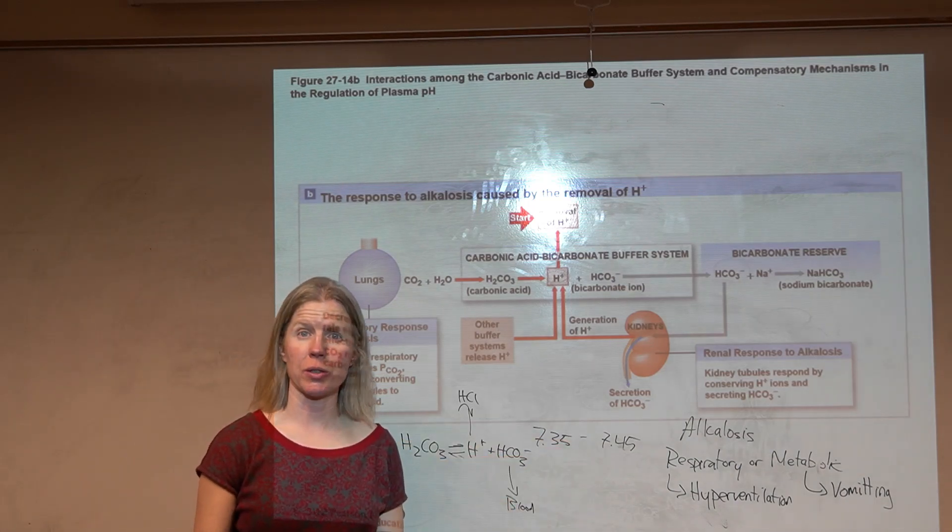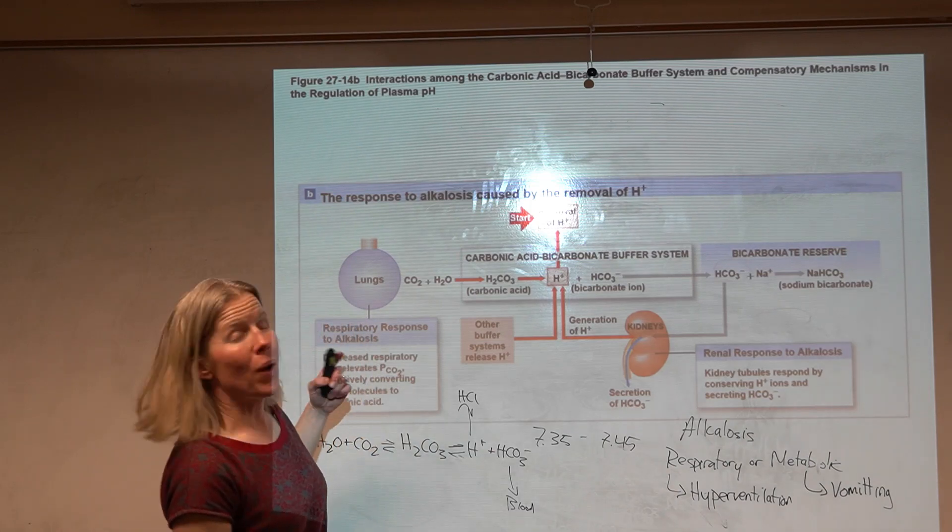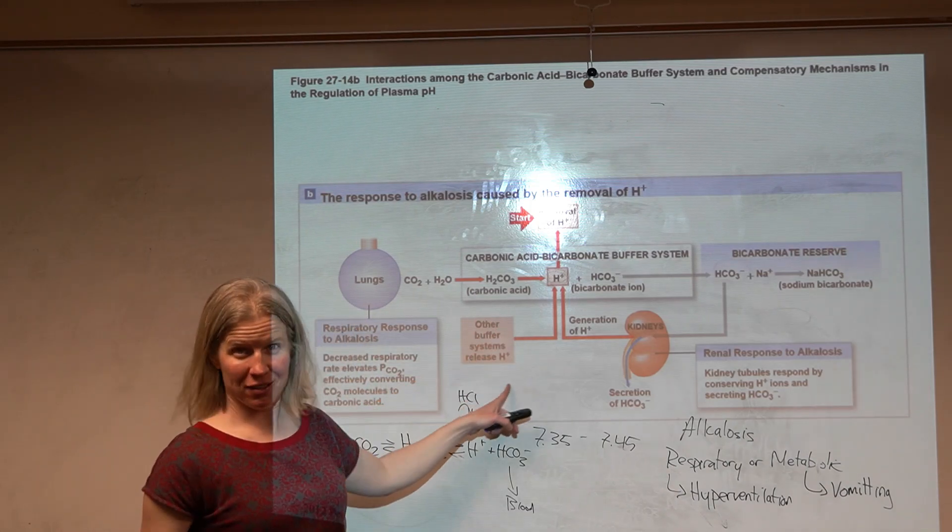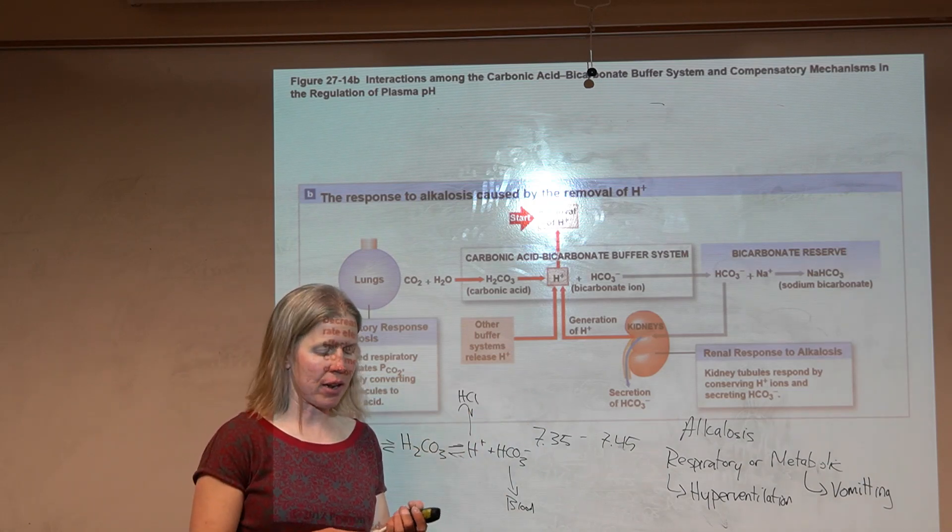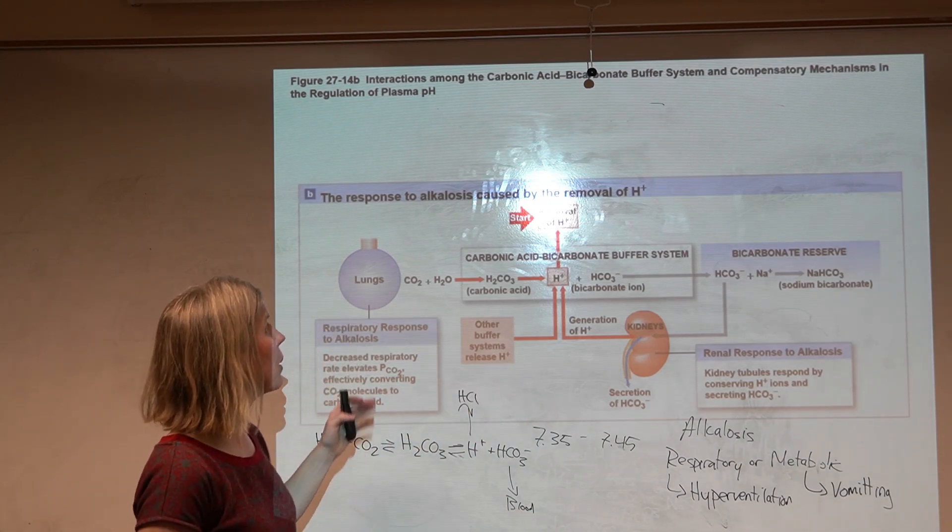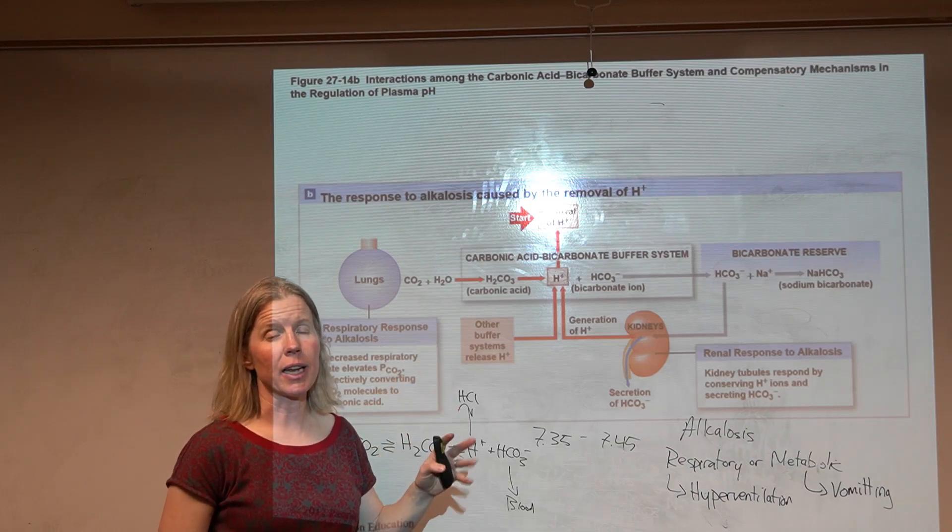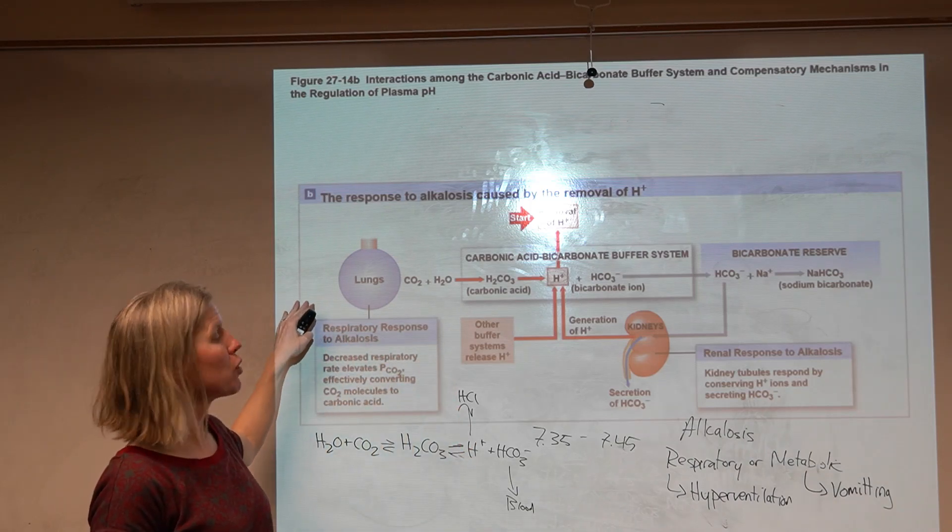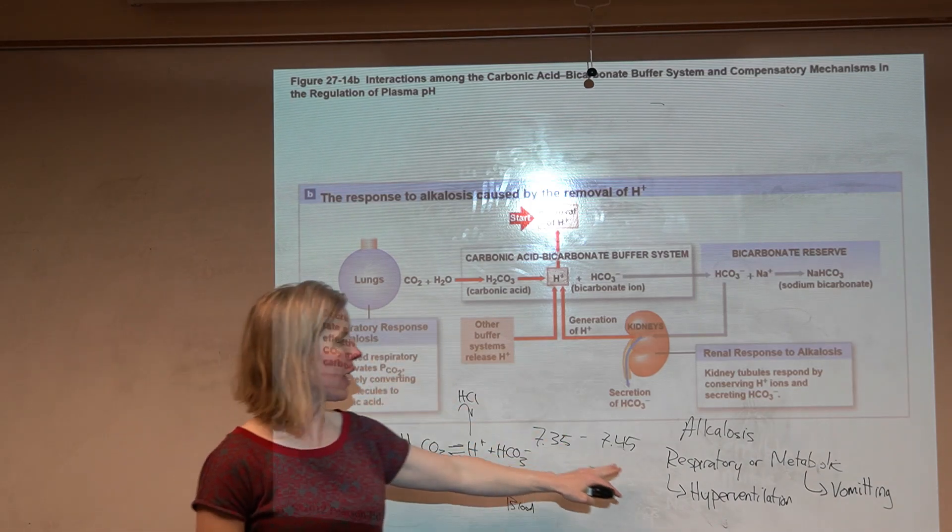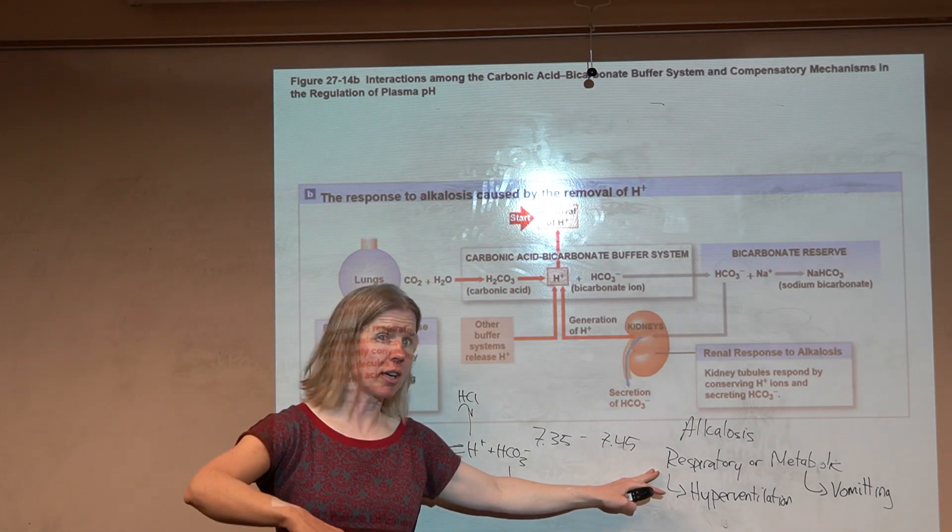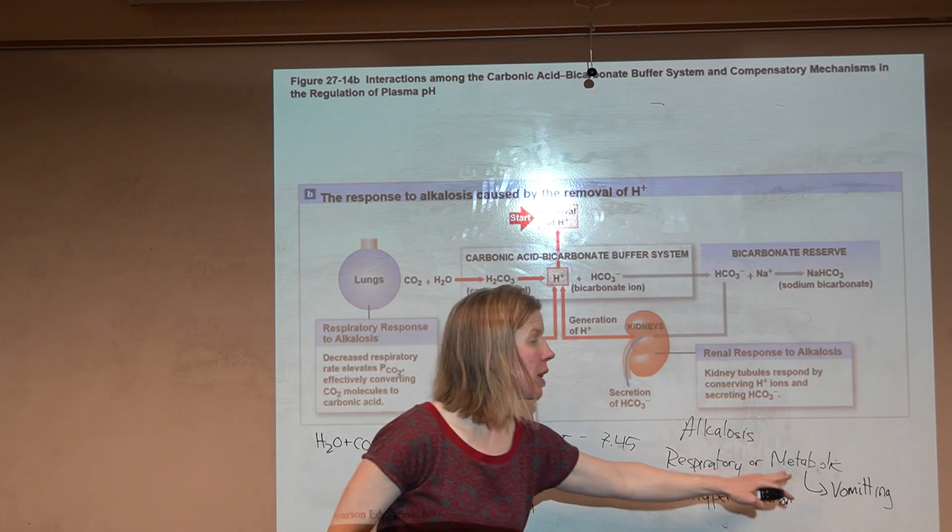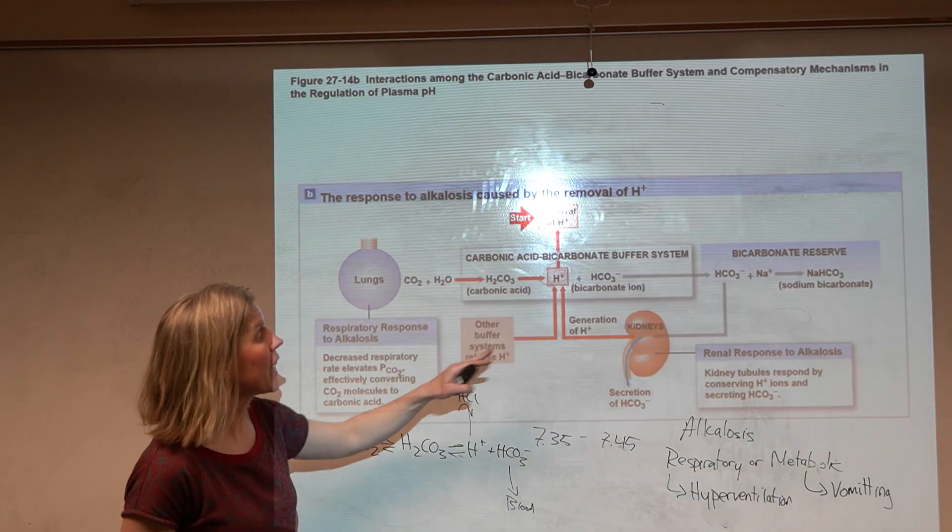We have buffers first step. Buffers will jump in and try to help mitigate this problem. Then we're looking towards the lung and the kidney. In this case, the respiratory compensation - if it's respiratory alkalosis, the lung is the problem. The lung is not saving your butt, we're going to rely on the kidney.